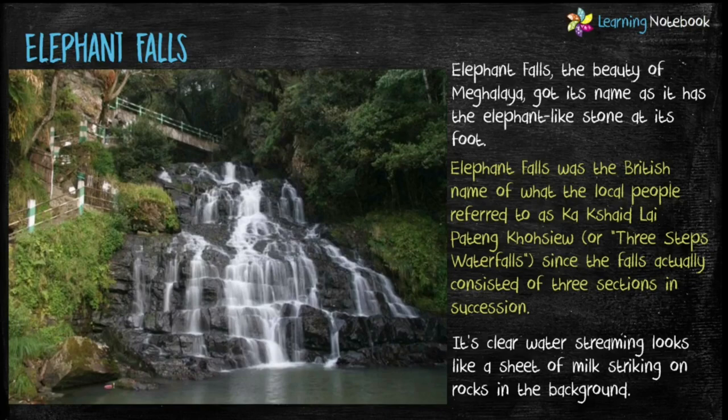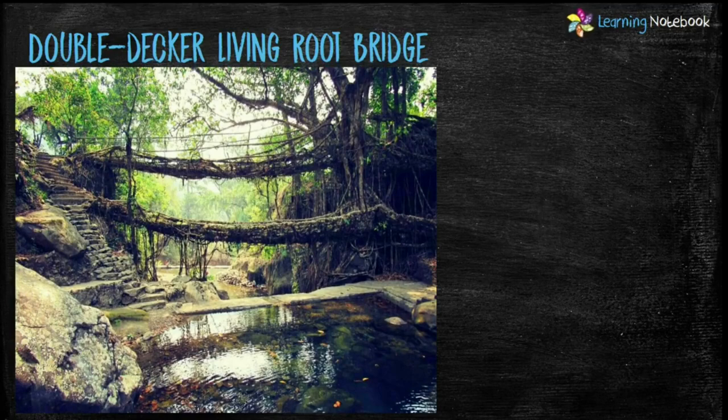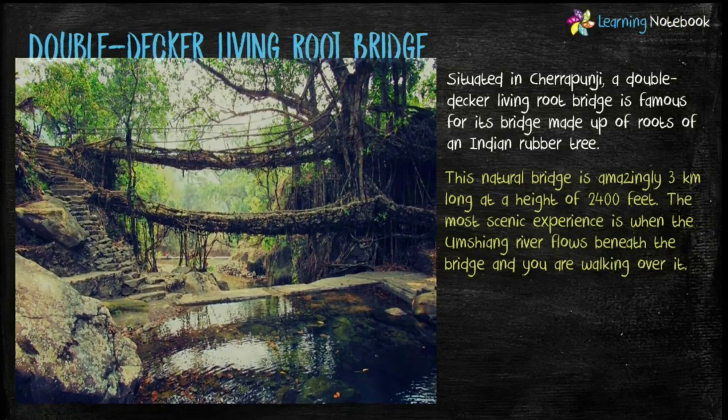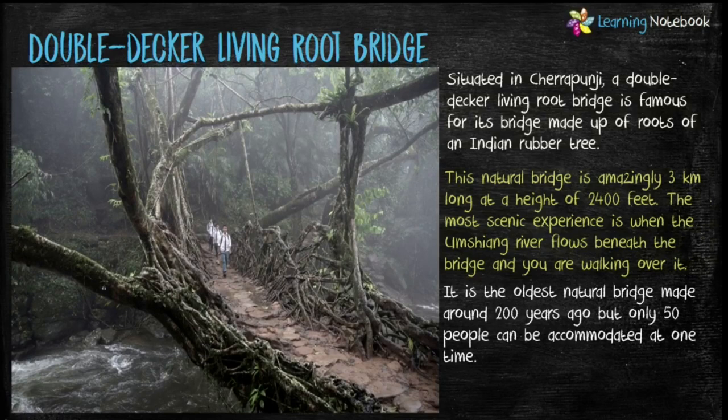Next famous place is the Double Decker Living Root Bridge, situated in Cherrapunji. This bridge is famous as it is made up of the roots of an Indian rubber tree. The Umshiang River flows beneath this bridge. It is the oldest natural bridge, made around 200 years ago, but only 50 people can be accommodated on it at one time.